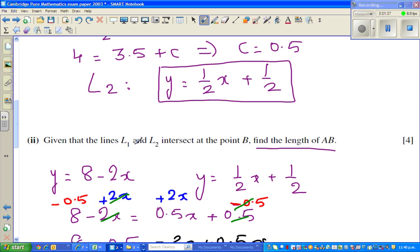Given that L1 and L2 intersect each other at B, find the length of AB. Then we solve these two equations by, this is called an elimination method. So I said this is equal to this. So 8 minus 2X is 0.5X plus 0.5. And what I did was, I grouped, I brought the X's together and the numbers together.